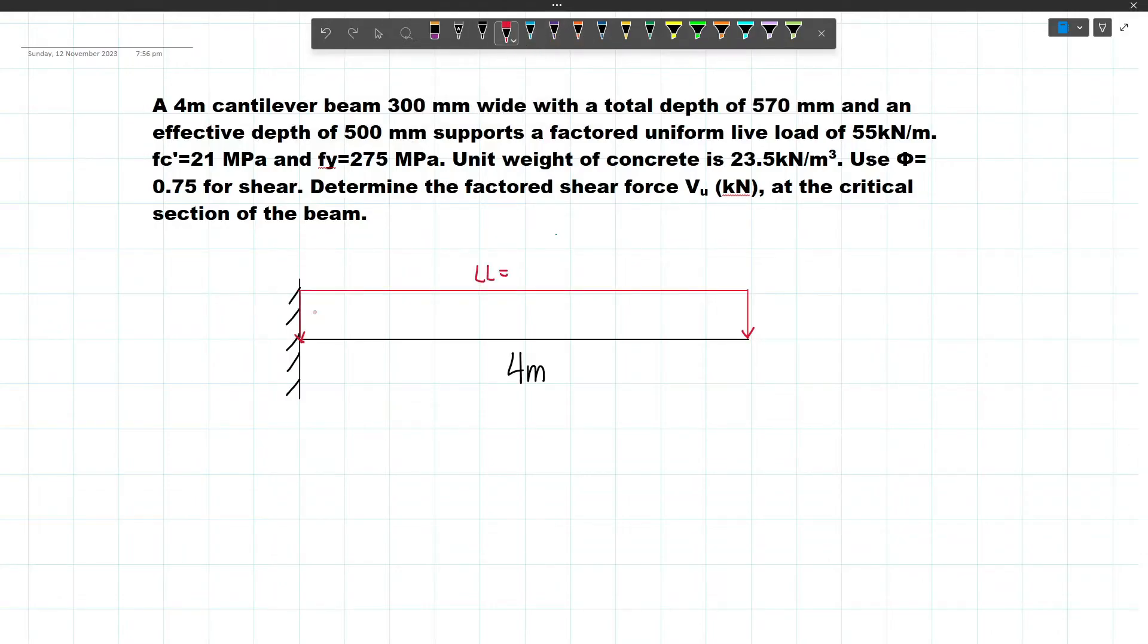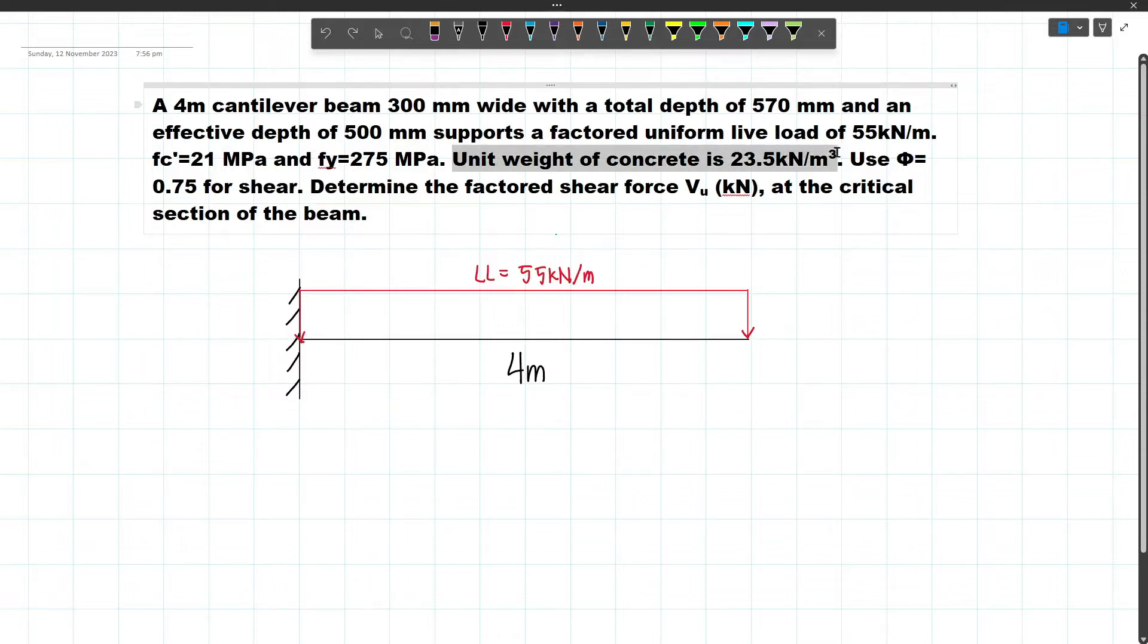Let's write that. This is the live load which is 55kN per meter. This is already factored so we don't have to multiply by 1.6. Next, fc' equals 21 MPa and fy equals 275 MPa. The unit weight of concrete is 23.5 kN/m³. Use φ equals 0.75 for shear.